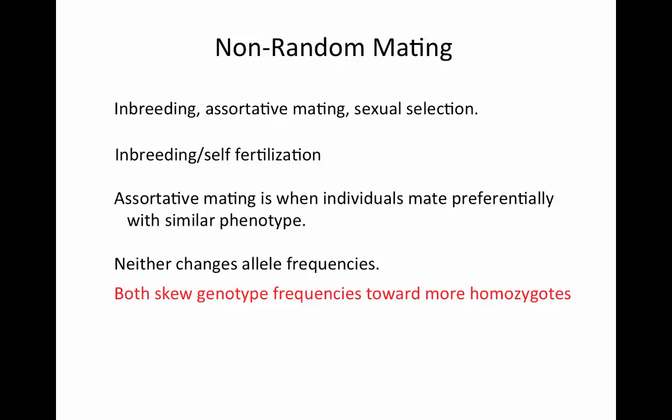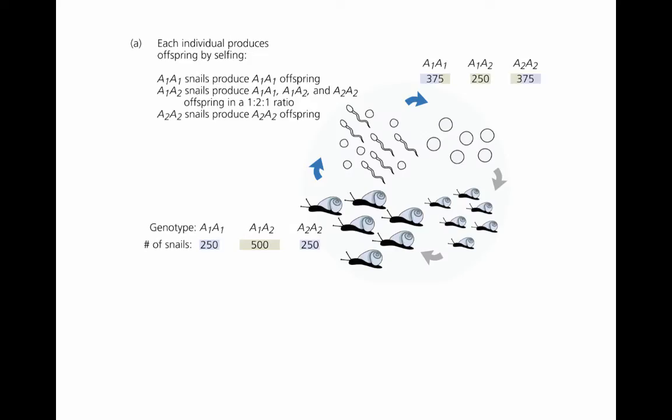So let's see how that works by looking at this extreme situation of self-fertilization. We're going to look at one turn of the generations in this population of snails. We're going to start with these adults that are in Hardy-Weinberg equilibrium. You can see that a quick calculation will show that the allele frequencies of the A1 and A2 allele are both 0.5.